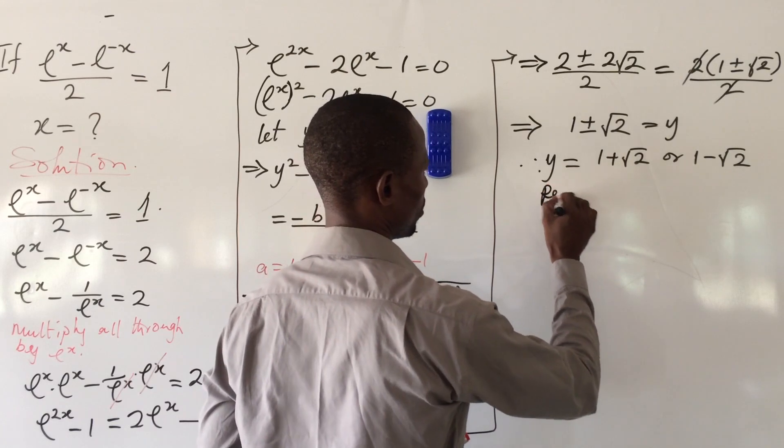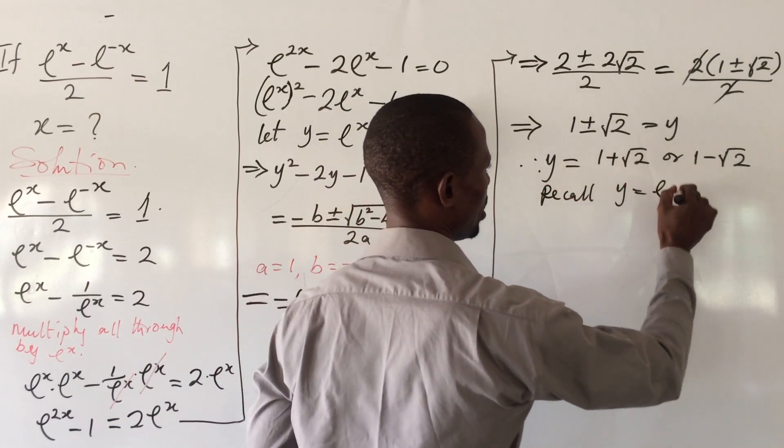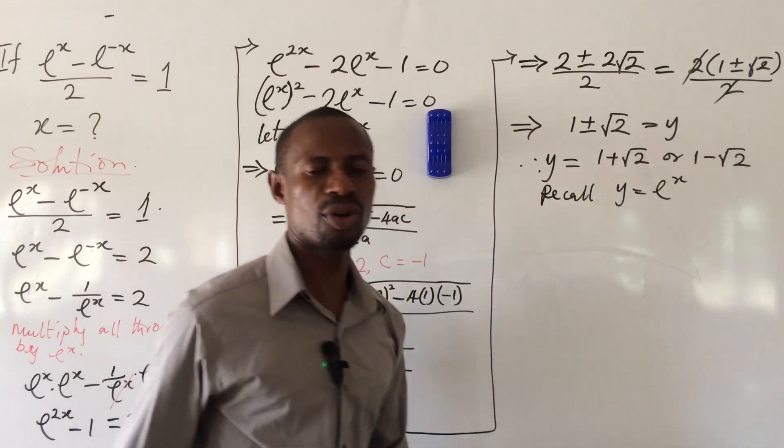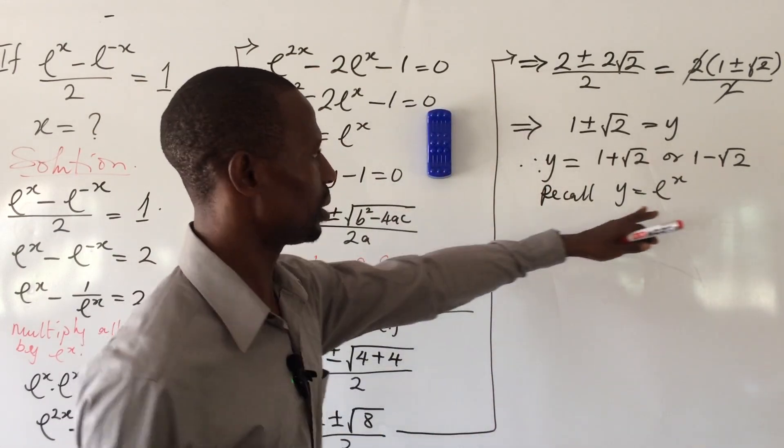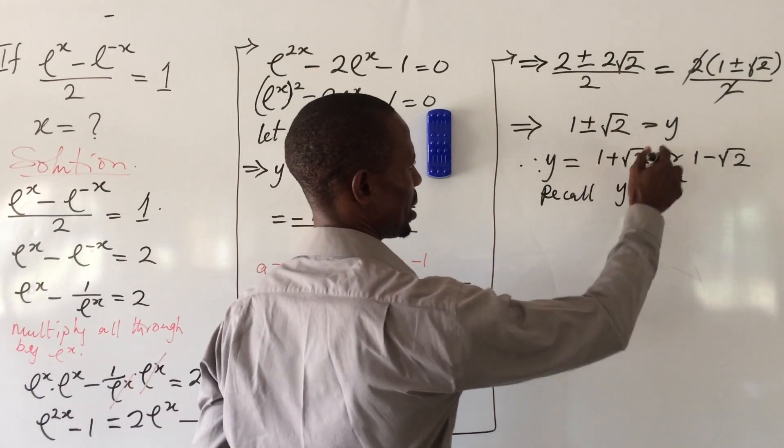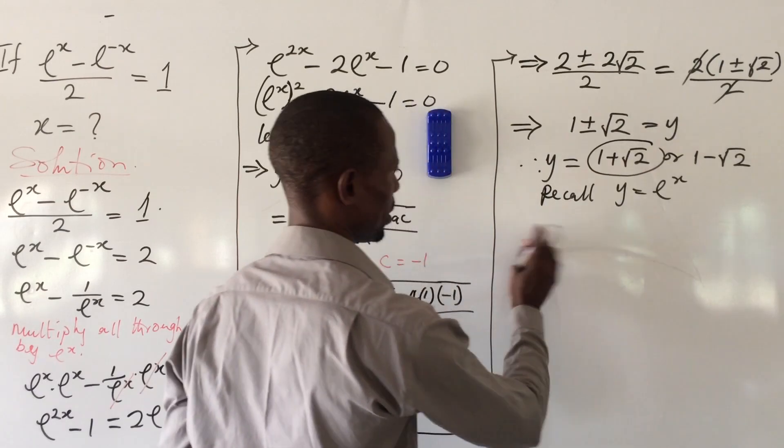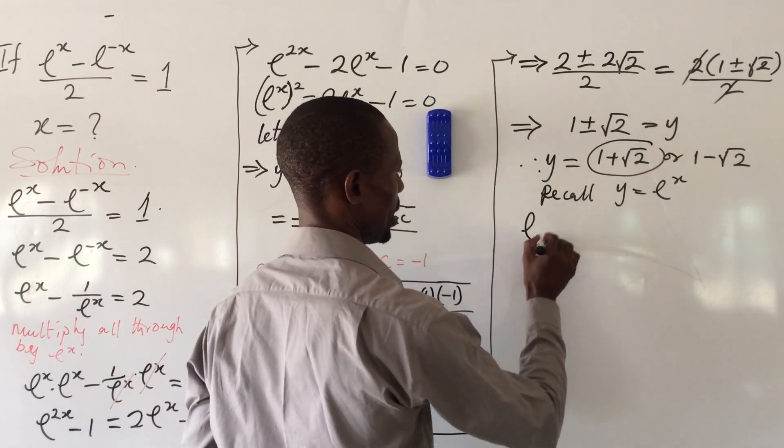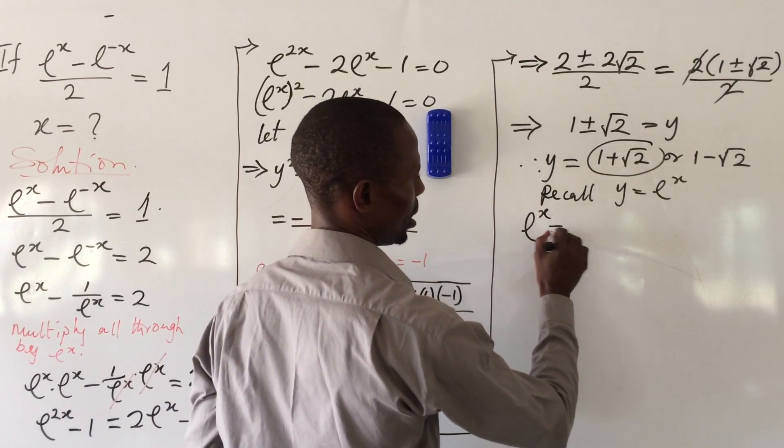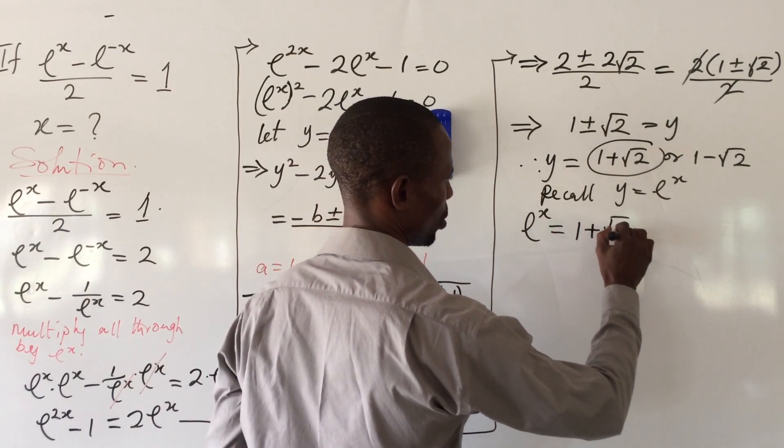Recall that y equals e^x. So whatever we see here, we put in this value. The first value is this one, so e^x = 1 + √2.